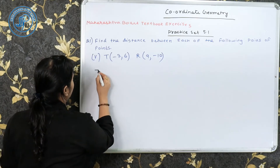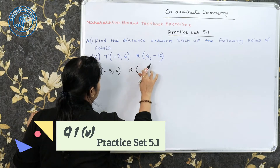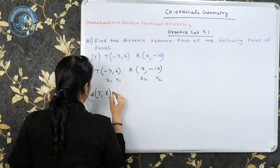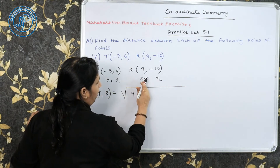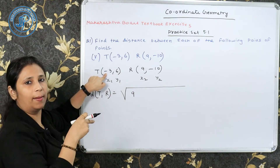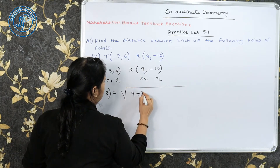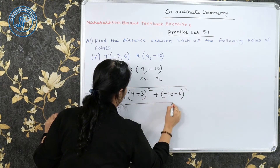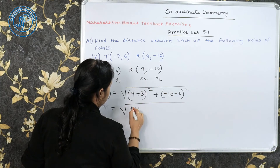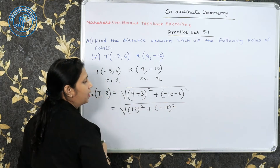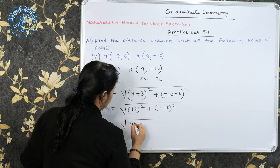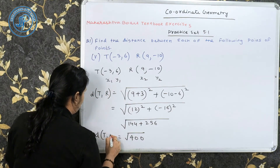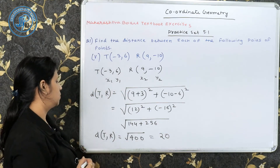Start करते हैं next sub-part। T और R दिया है — यह X1, Y1, X2, Y2 है। Distance TR = √[(x2 − x1)² + (y2 − y1)²]। X1 पहले से ही negative में है, तो positive हो जाएगा: (12)² = 144। Y2 − Y1 में minus × minus = plus: (−16)² = 256। 144 + 256 = 400। √400 = 20। Distance TR = 20।